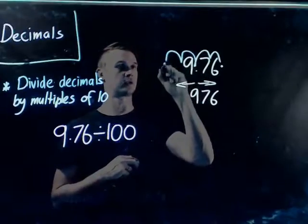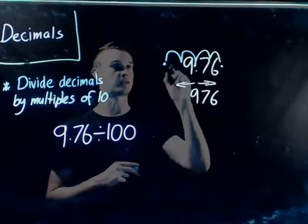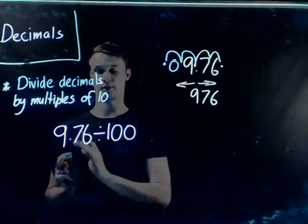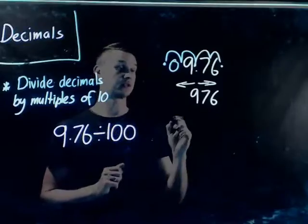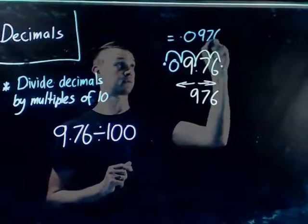So, one, two, and we put the decimal place here, and all you need to do is fill in those empty spaces with a zero. So, 9.76 divided by 100 simply equals 0.0976.